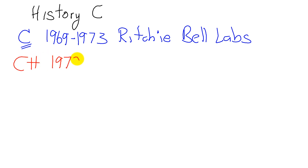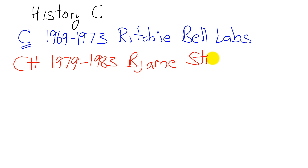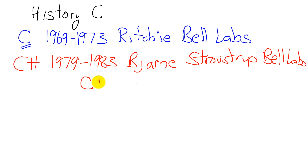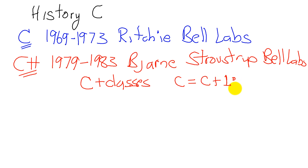About a decade later, from approximately 1979 to 1983, Bjarne Stroustrup, also from Bell Labs, took C and added classes. Classes are an object or a way to abstract, and this became the language called C++. If you take C and add one to it — which is a programming statement in C — this can be written as C++. That's why we call it C++.